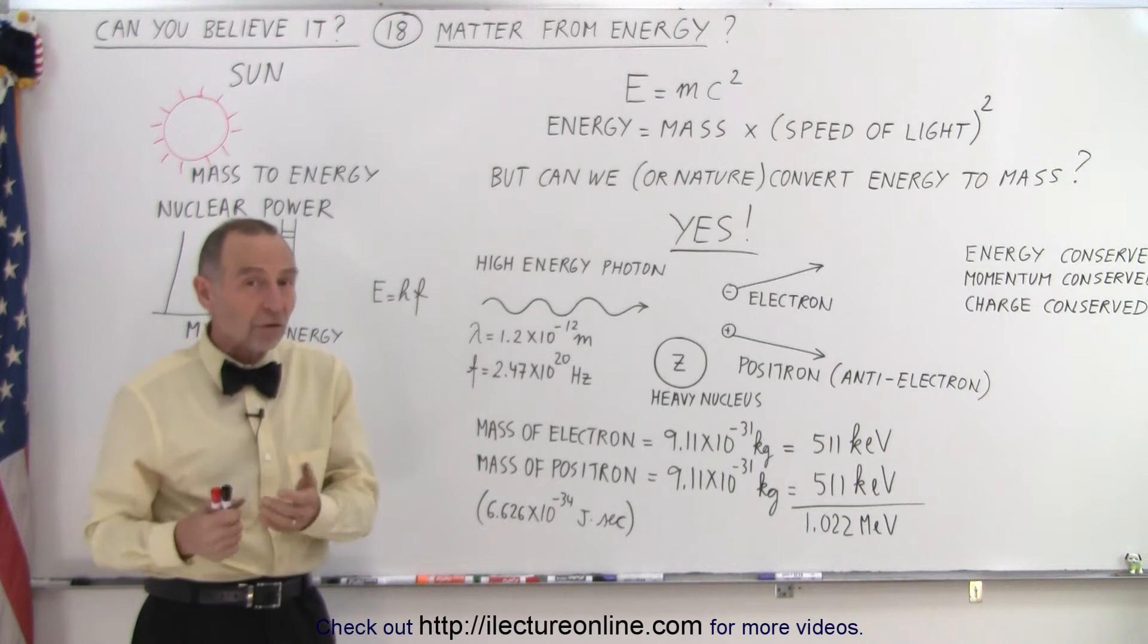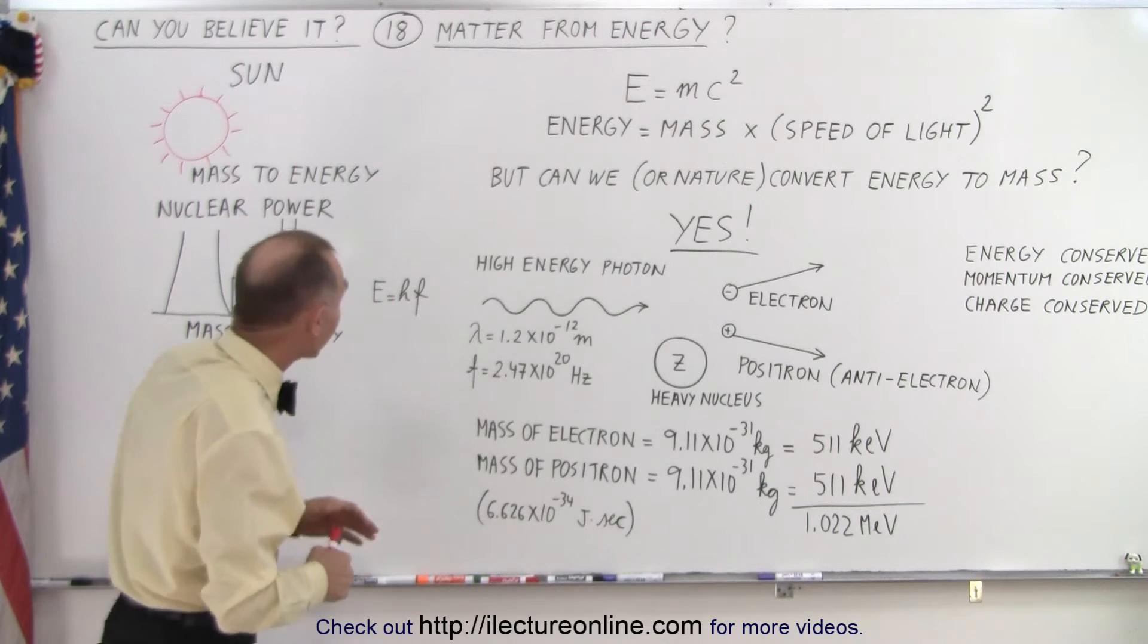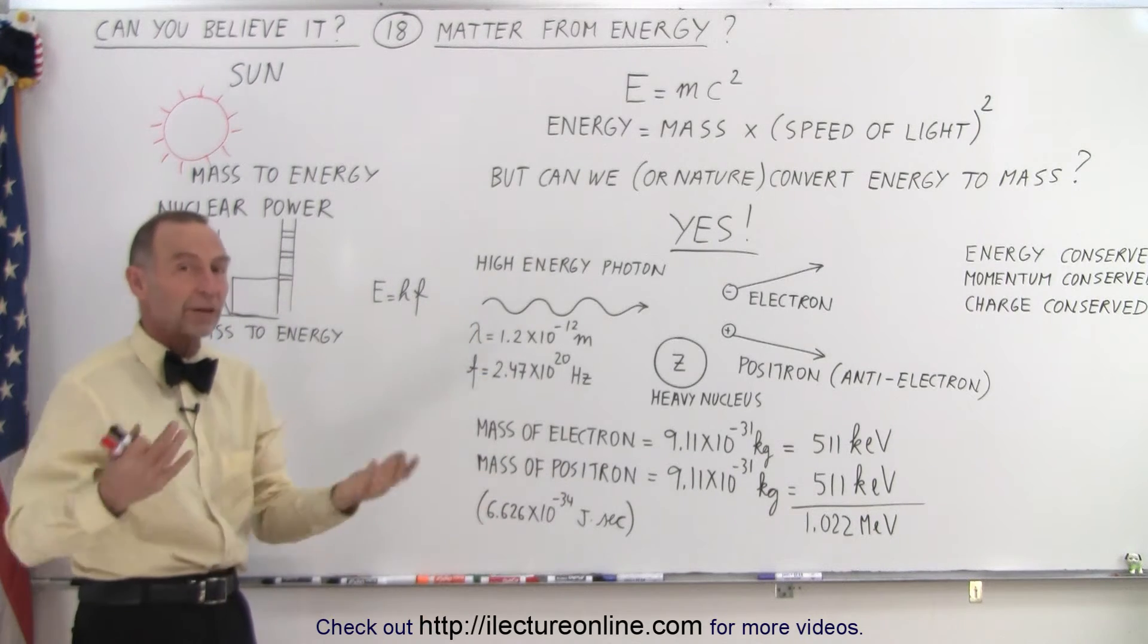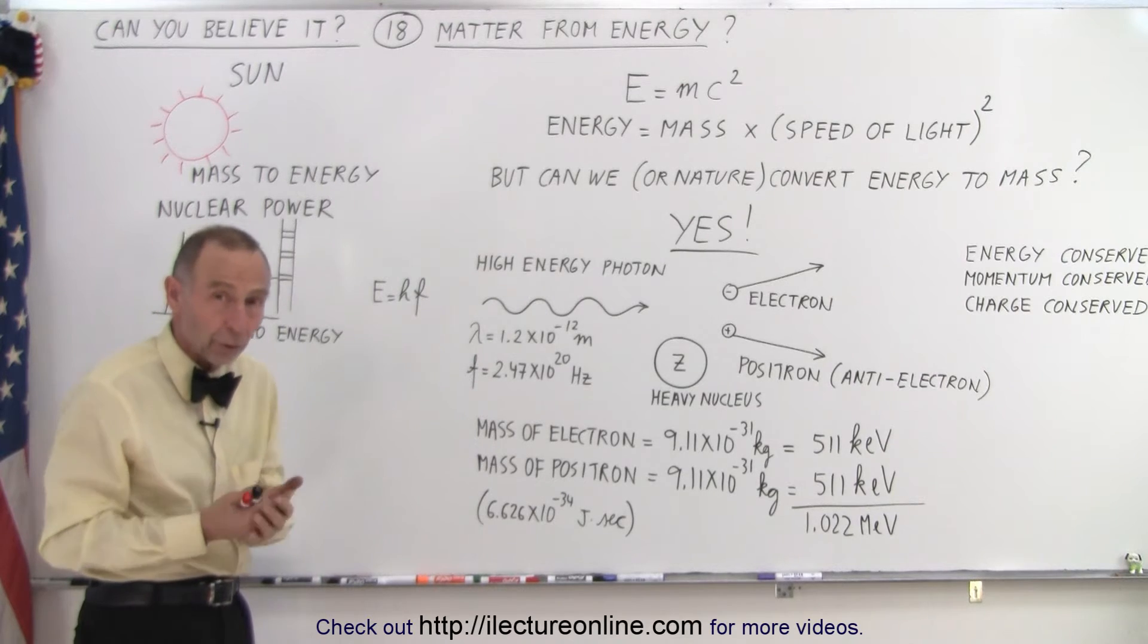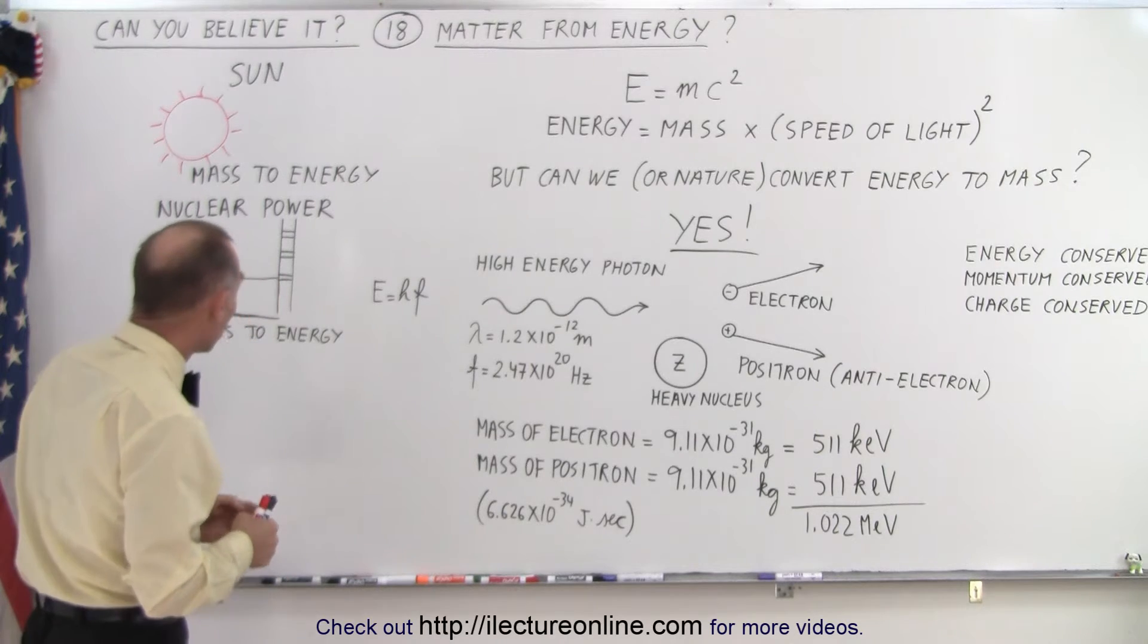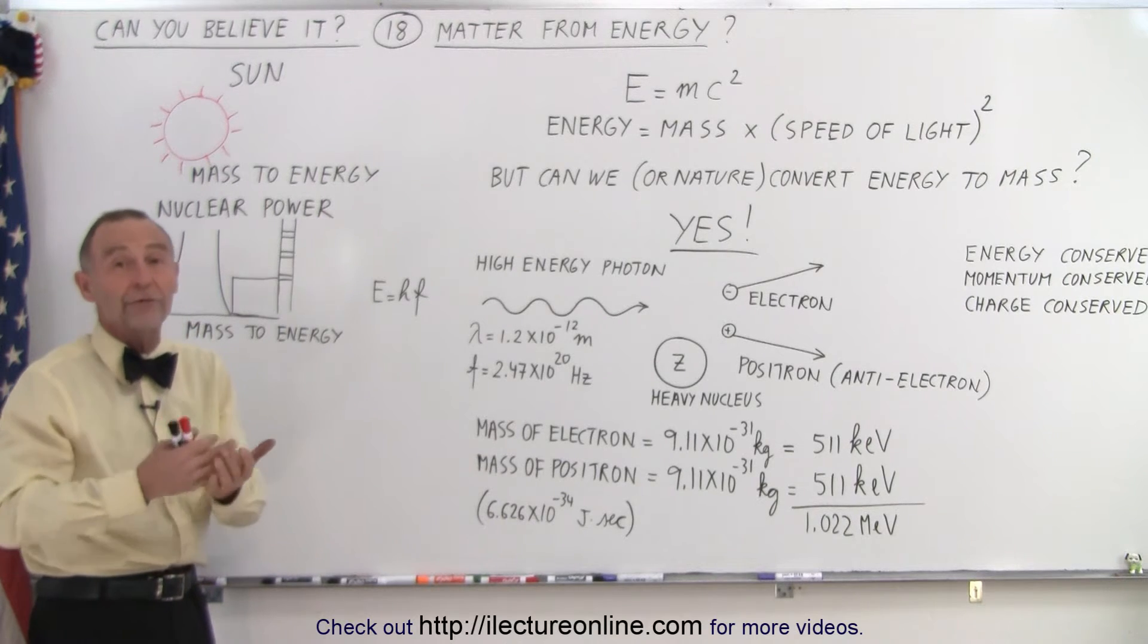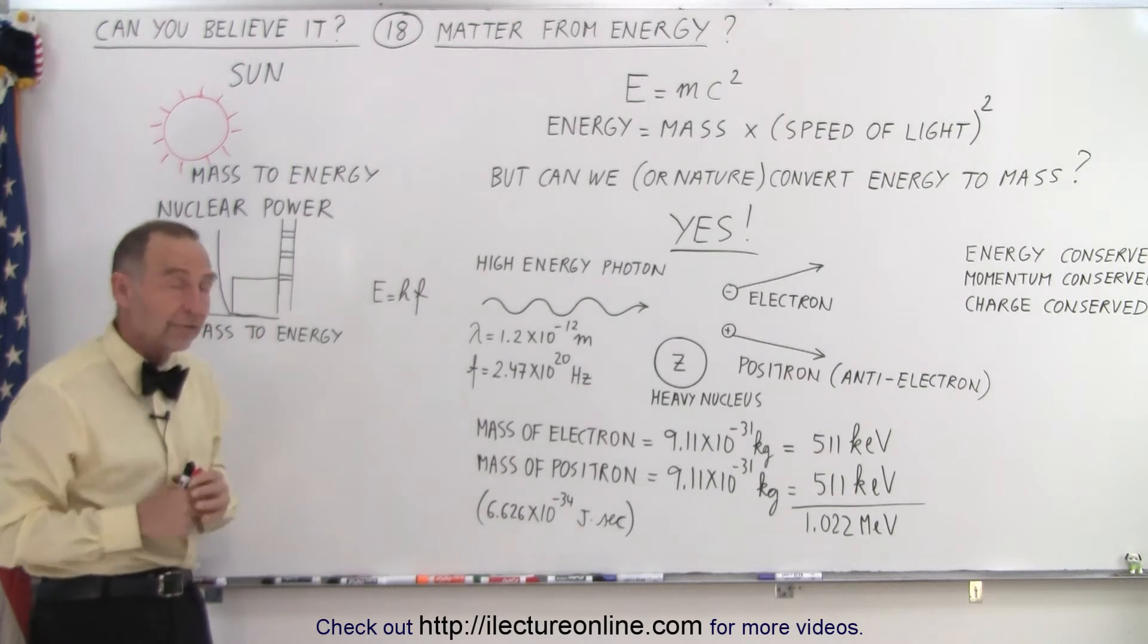But then we began to discover that, indeed, there's situations where mass is converted to energy. For example, in the sun, the sun converts mass to energy in its core, and that is why the sun produces this enormous amount of energy by converting approximately 9 billion pounds, or over 4 billion kilograms of matter, into energy every single second. We can do it here on Earth in nuclear power plants. We take radioactive material, and we use that to convert matter into energy, and we can create an enormous amount of energy with a small amount of matter.